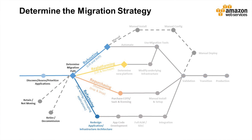During planning, we need to select the appropriate migration strategy for each application workload identified during the discovery stage. Typically, some workloads can be completely retired, and some are just not yet ready for cloud migration — those we could exclude from the migration plan. We should still document those in the project plan for consistency and transparency. But for others, we need to pick the appropriate migration strategy.